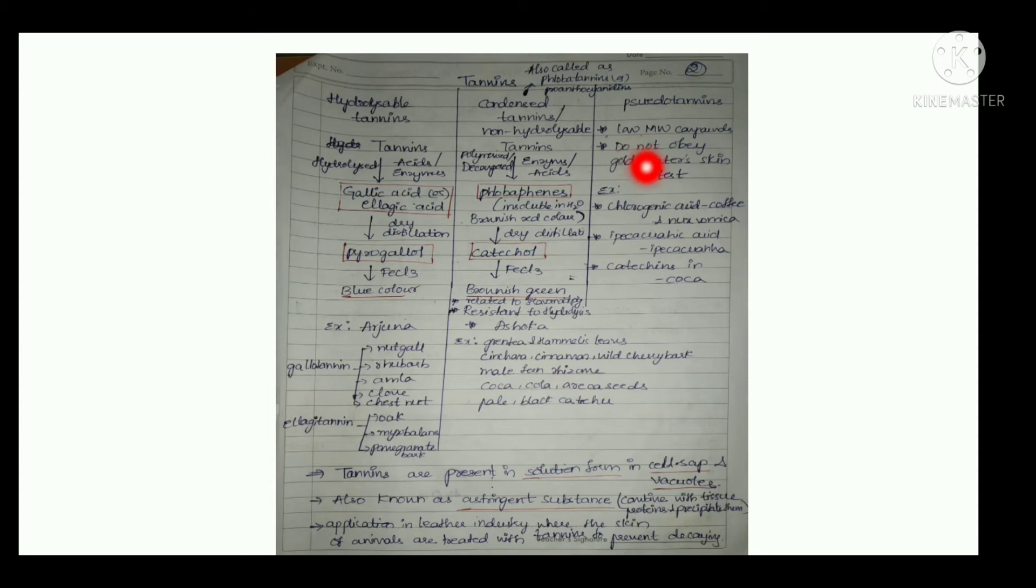Pseudotannins are low molecular weight compounds and they do not obey Goldbeater's skin test. Examples include chlorogenic acid which is present in coffee and Nux vomica, epicatechin acid, and catechins in coca. These examples are very important in every classification.